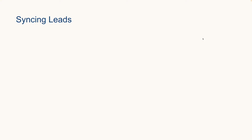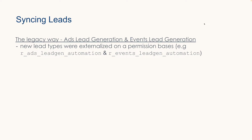Let's talk about syncing leads — first, the legacy way. The legacy way provided two unique permissions: r_leadgen_automation and r_events_leadgen_automation, which allowed you to retrieve forms and form responses tied to an ad or LinkedIn event. If we provided a new lead type and a new permission that you wanted to build to, this would have required adding an additional scope to your OAuth flow, all of your customers having to reauthenticate, and building to another set of unique API endpoints. These permissions and their endpoints will reach end of life in July 2024.